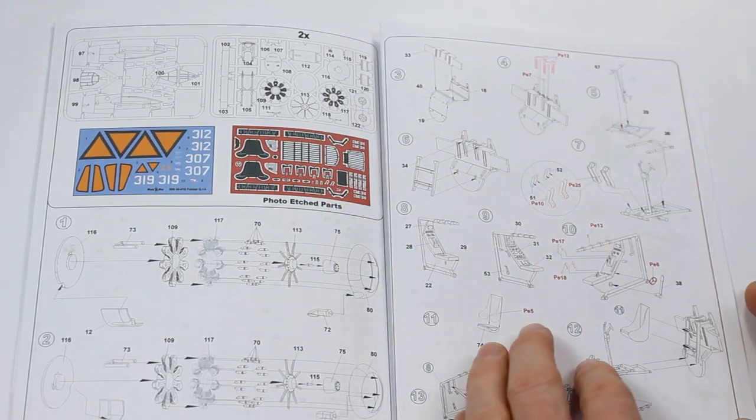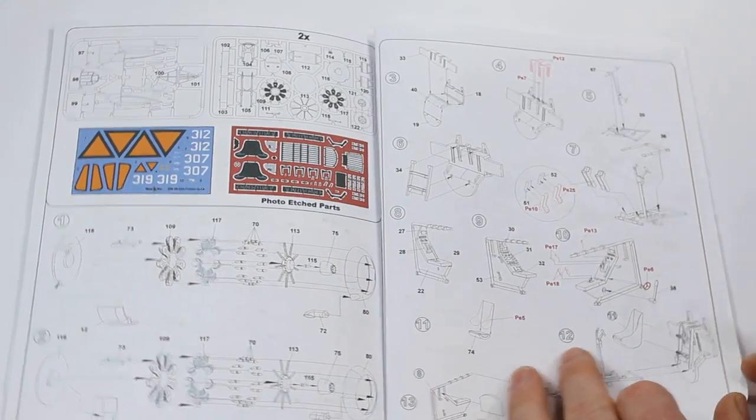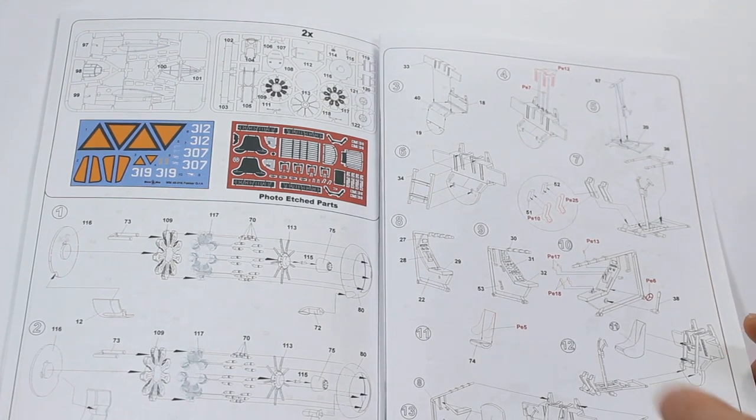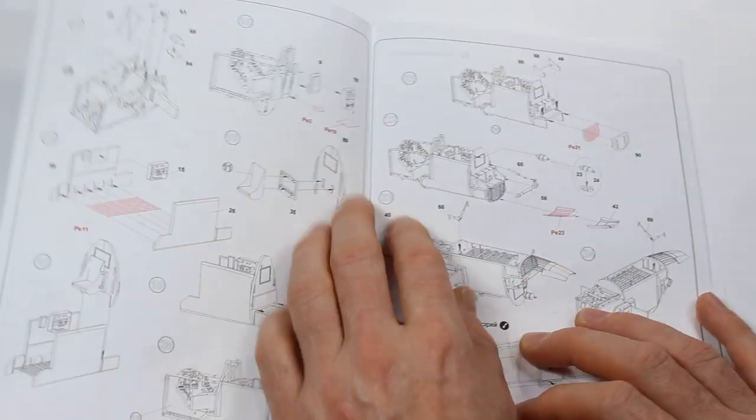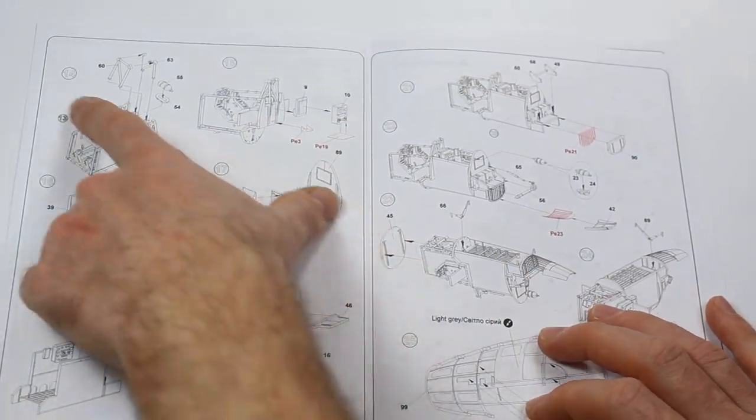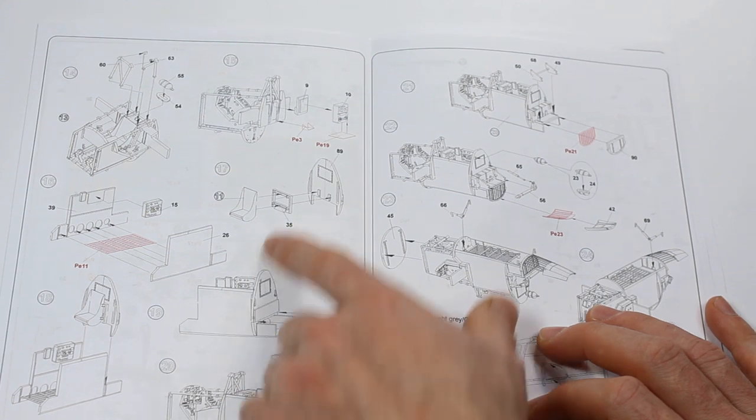Then we're starting to build up parts of the cockpit. There's a bit of photo etch going on there as well. It looks like one of those suspended cockpits with lots of framing around the foot well.